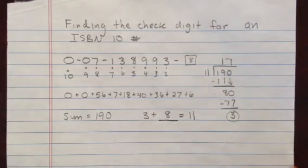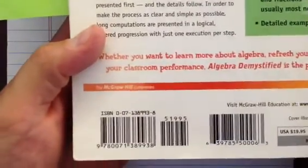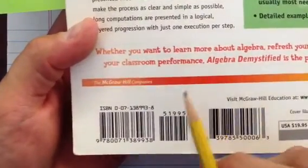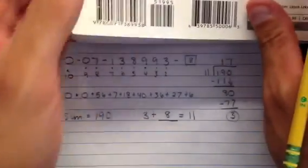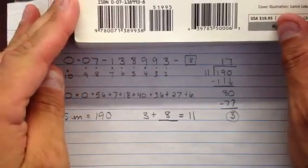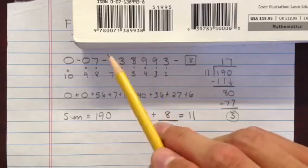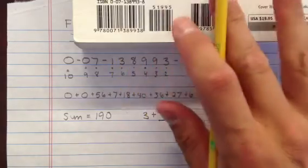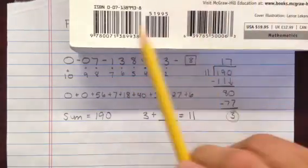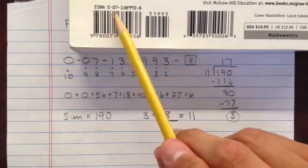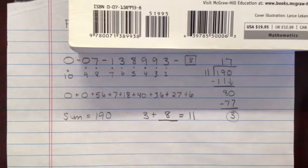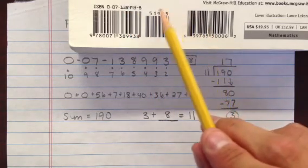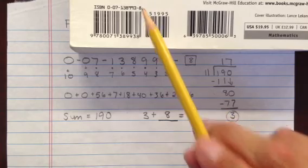I have the book here — it's probably going to be hard to see, but you can actually see it pretty good. There's the number we had. You can compare them right there and see that the numbers all line up. See the number 0-0-7-1-3-8-9-9-3, and at the end, 8 is the check digit.